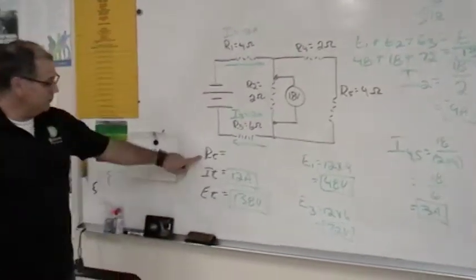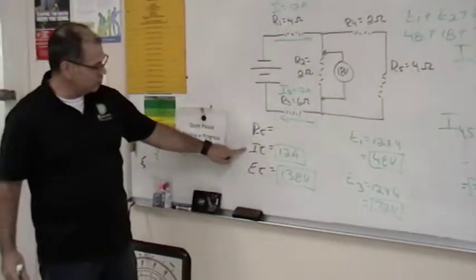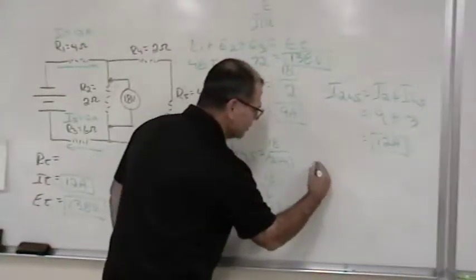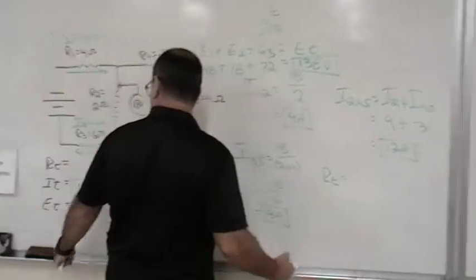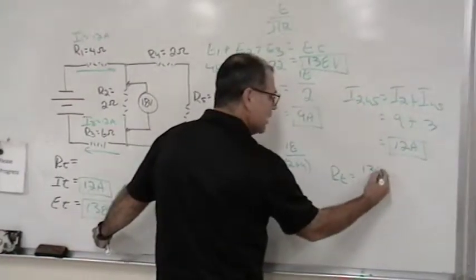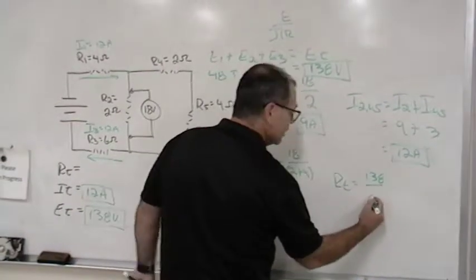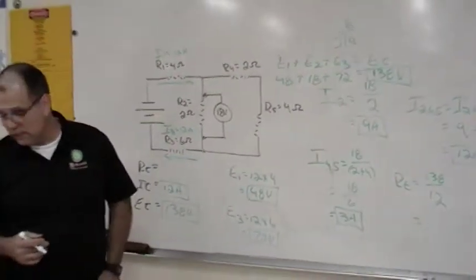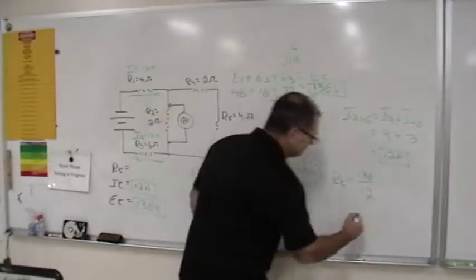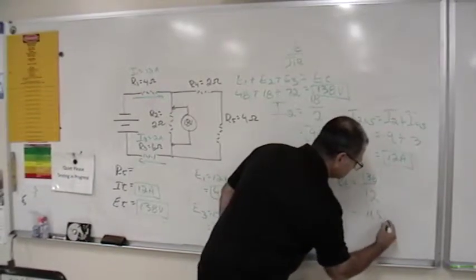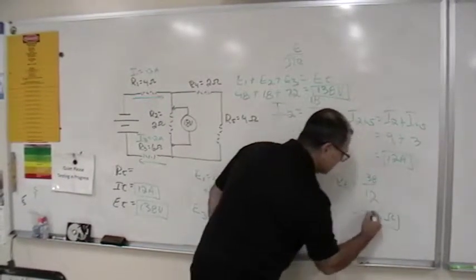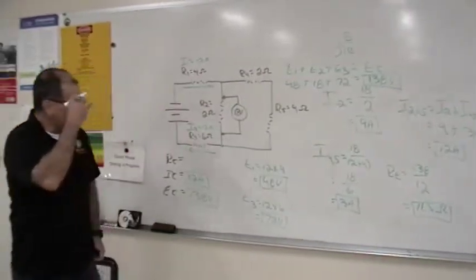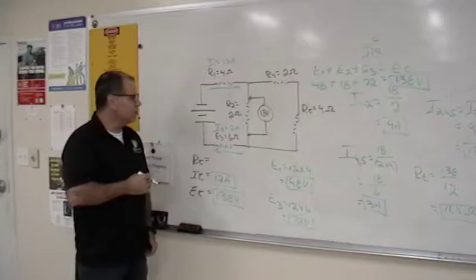138 volts. And now that I have total voltage and total current, I can solve for total resistance. Total resistance is equal to the voltage, 138 divided by 12. And what do we get with that, guys? 11.5. Is that right, guys? Yes, sir.